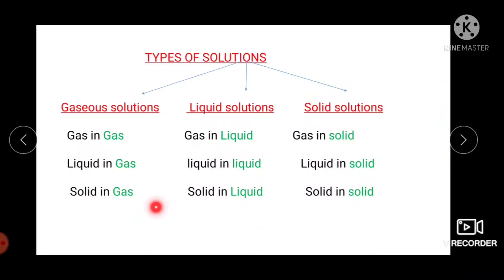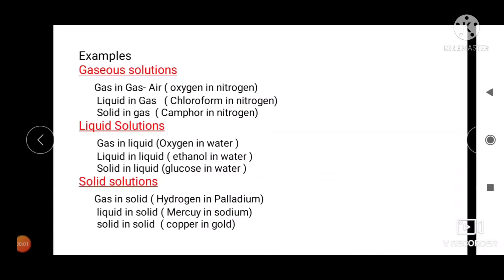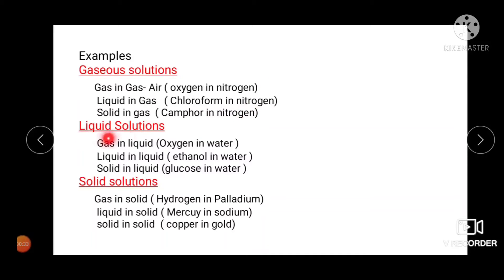There are a total of nine binary solutions. Let us study some examples. Gaseous solution — gas in gas: air, or oxygen in nitrogen. Liquid in gas: chloroform in nitrogen. Solid in gas: camphor in nitrogen.